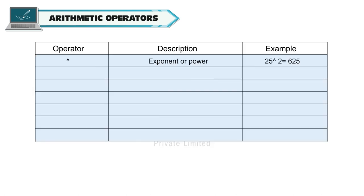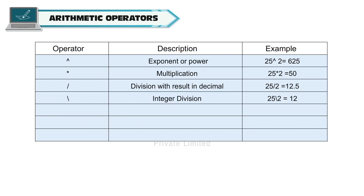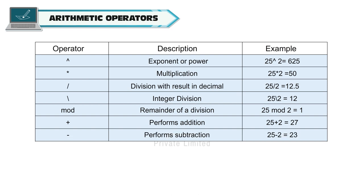The caret operator denotes exponent or power; for example, 25 to the power of 2 equals 625. The asterisk operator is used for multiplication; for example, 25 times 2 is 50. The forward slash is for division with a decimal result; for example, 25 divided by 2 equals 12.5. Backslash is for integer division; for example, 25 backslash 2 equals 12. Mod is used for the remainder of a division; 25 mod 2 equals 1. Plus performs addition; 25 plus 2 equals 27. Minus performs subtraction; 25 minus 2 equals 23.